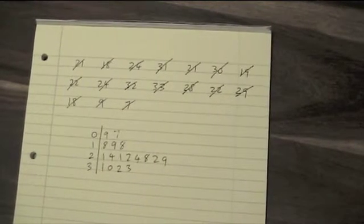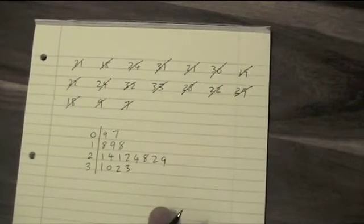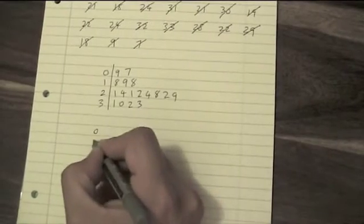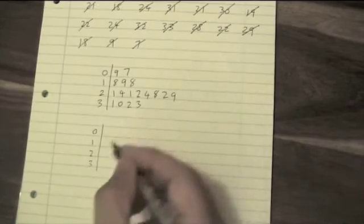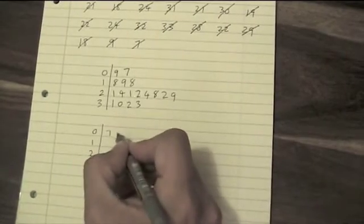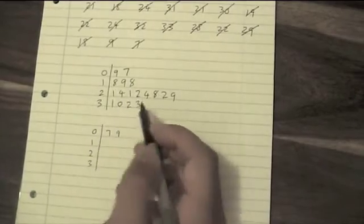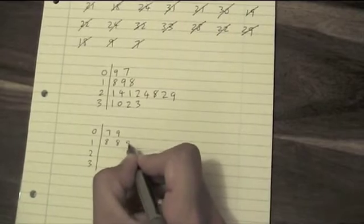The next thing to do is to rewrite the whole thing but put the leaf columns in order. So 0, 1, 2, 3, vertical line, 7 and 9. As I'm doing this, I'm trying to keep them spaced out. So this one's going to be 8, 8, 9.